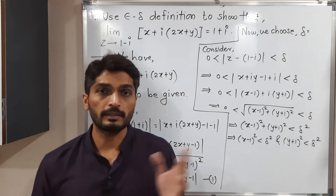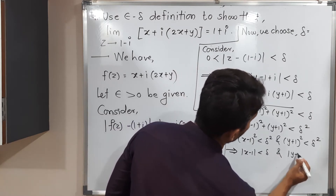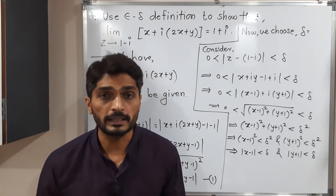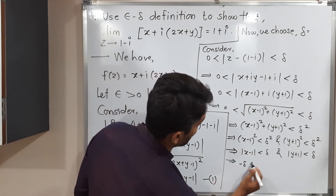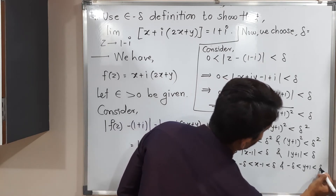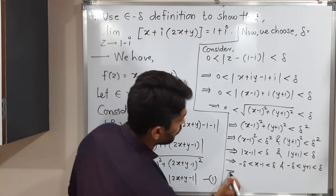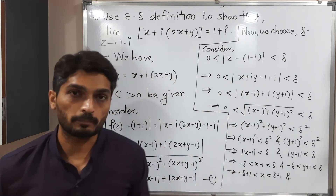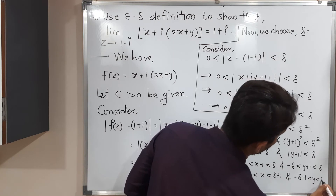Using the property that mod a less than b if and only if minus b less than a less than b, we get: minus delta less than x minus 1 less than delta, and minus delta less than y plus 1 less than delta. Adding 1 throughout the first: minus delta plus 1 less than x less than delta plus 1. Subtracting 1 throughout the second: minus delta minus 1 less than y less than delta minus 1.